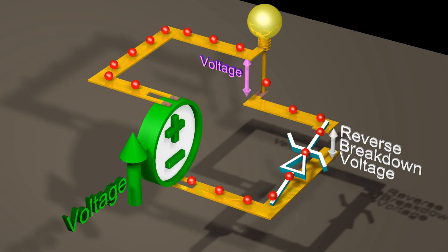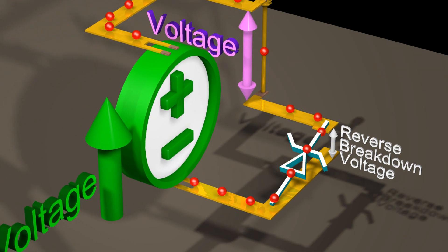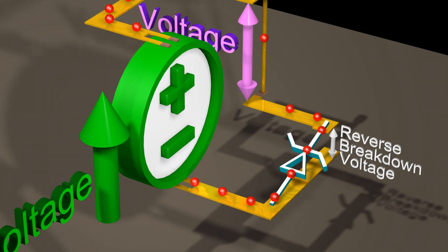When a Zener diode conducts in the reverse direction, the voltage drop across it stays approximately equal to the reverse breakdown voltage.